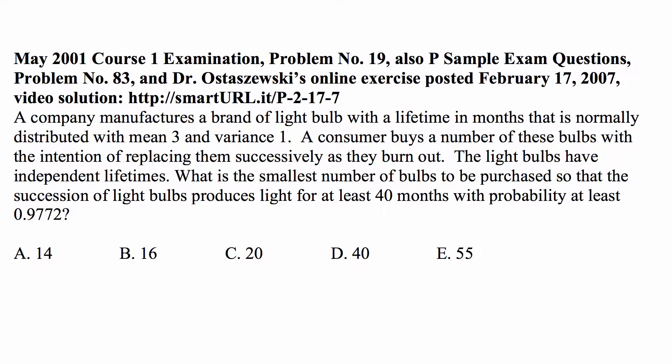What is the smallest number of bulbs to be purchased so that the succession of light bulbs produces light for at least 40 months with probability of at least 0.9772?